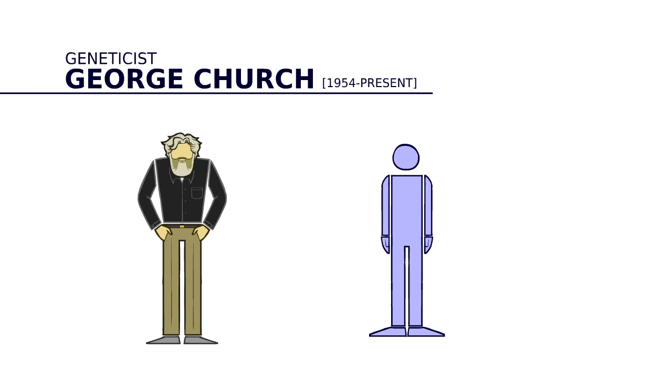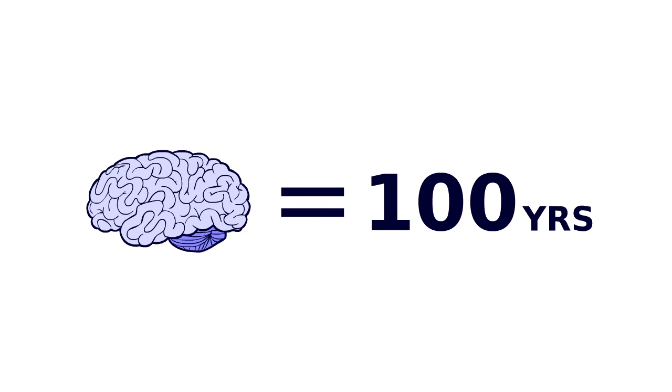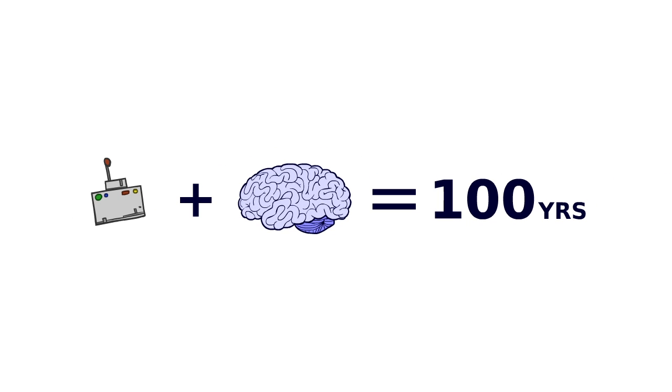But as geneticist George Church points out, we can theoretically replace every organ except the brain. So dealing with your aging brain will be the biggest challenge as we extend life well past a century. That's where nanotechnology comes in.